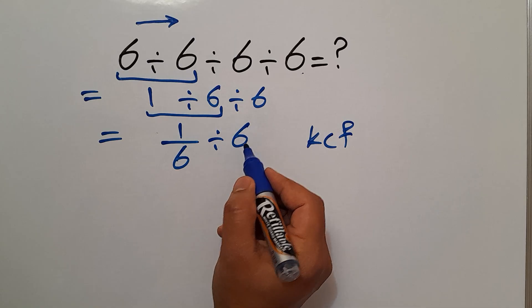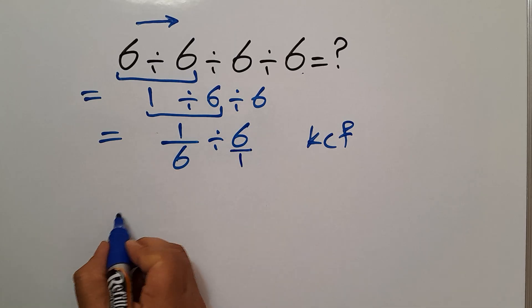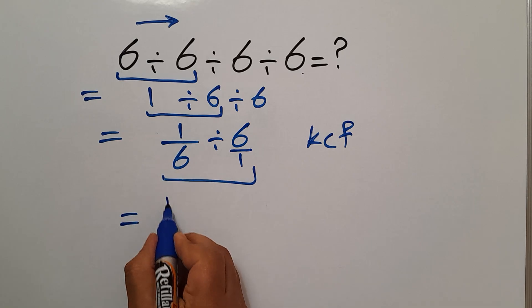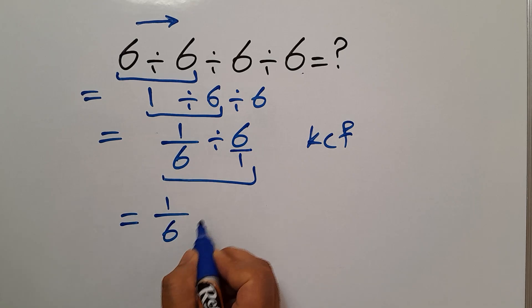Our second fraction is 6 over 1. Okay, according to the KCF rule, we can write 1 over 6 then times 1 over 6.